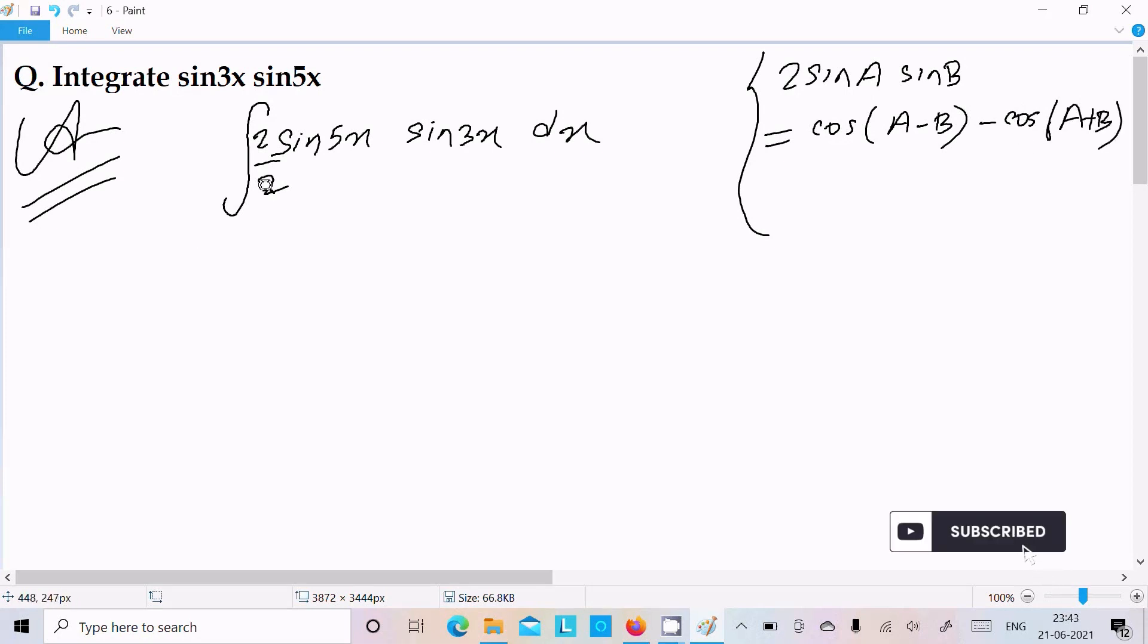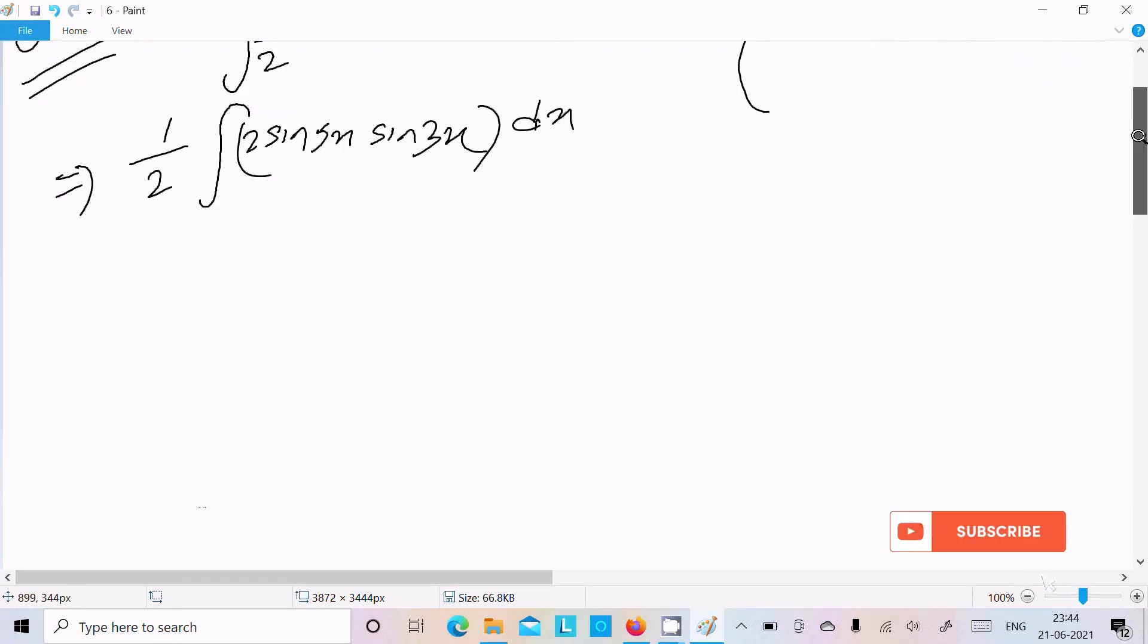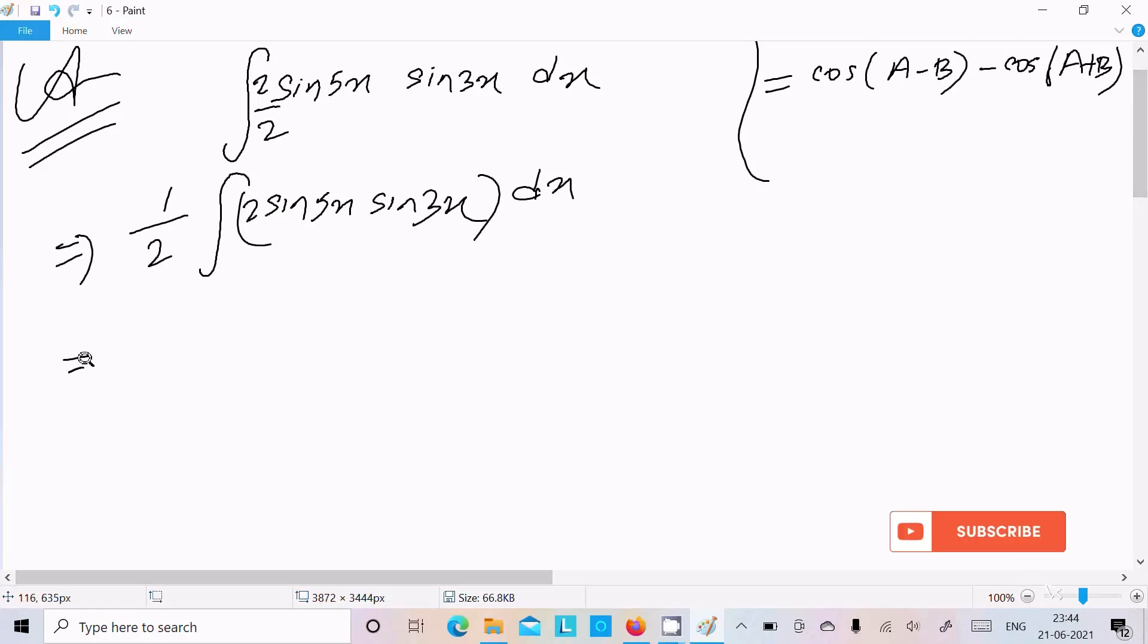So here we can write 1/2, next is 2sin5x sin3x dx. Next is cos A minus B, so we can write 1/2 integration symbol, cos A minus B, that is cos(5x - 3x).